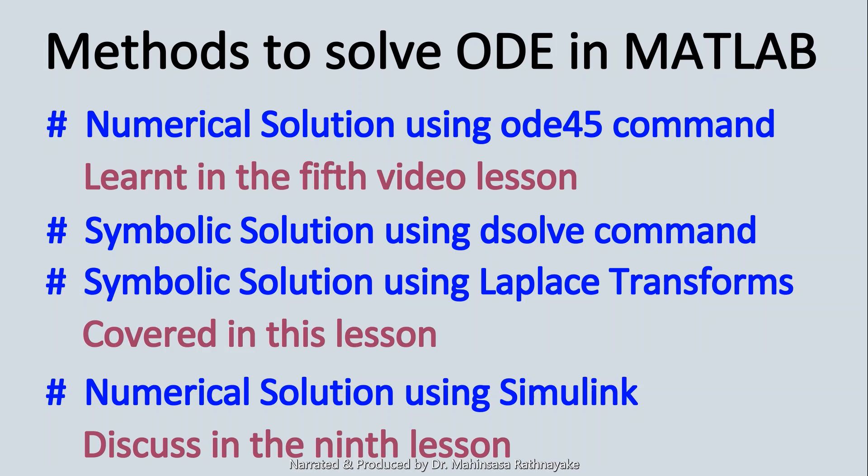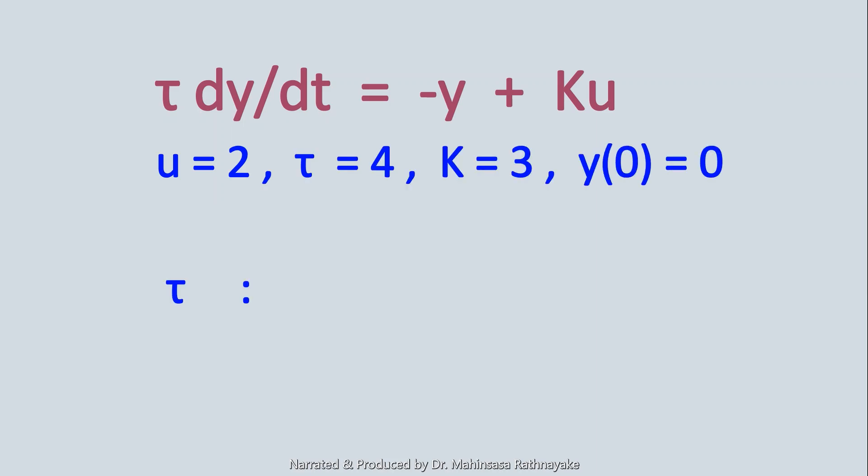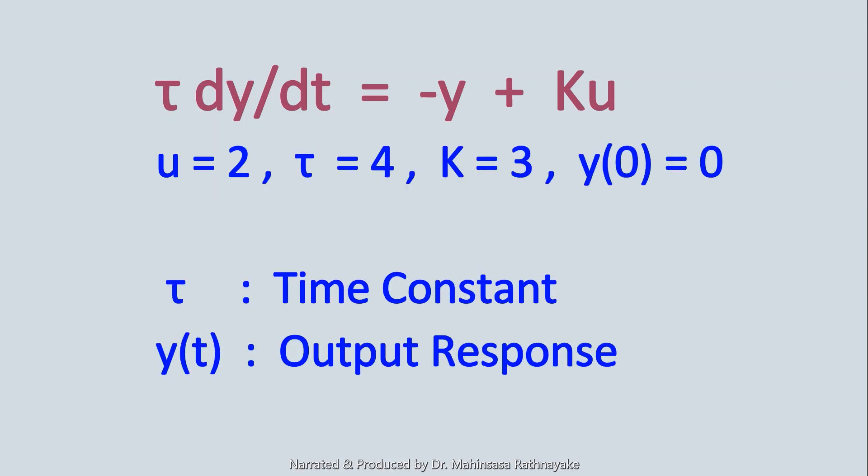Let's consider the differential equation as tau dy over dt is equal to minus y plus ku. This is a common example that we discuss under process dynamics and control.